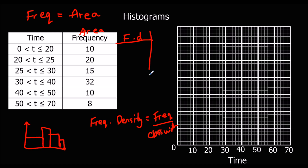We need to work out the frequency density, so the width for each bar. This one is 0 to 20, so the width is 20. 20 to 25 has got a width of 5 - it's how far in between the two points. So 0 to 20 is 20 wide. The area is 10, so this is the height - frequency density. We do frequency divided by width: 10 divided by 20, that's 0.5.